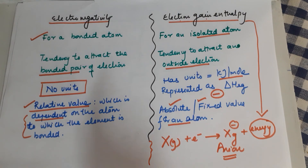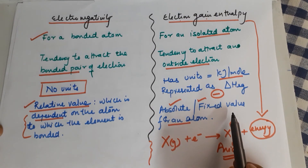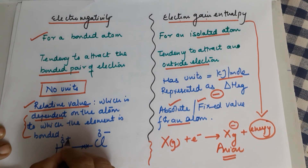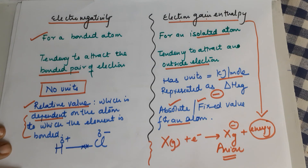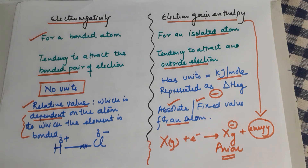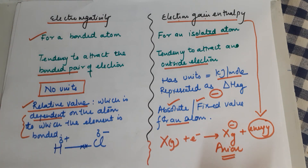With this I conclude: the difference between electronegativity and electron gain enthalpy is a commonly asked question. For illustration, in HCl, the shared pair shifts towards Cl — Cl gets delta minus and H gets delta plus. That covers electronegativity and its comparison with electron gain enthalpy. Thanks a lot, kids — I hope I've helped you understand the topic. May God bless you with good health. Keep liking, subscribing, and sharing!